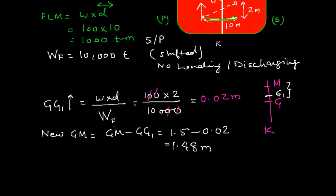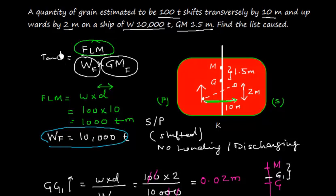Now we have all these three parameters. We have the GM, we have final displacement, and we have the list moment also. All we need to do is put all these values in this formula. Tan theta equals final list moment divided by WF into GMF.